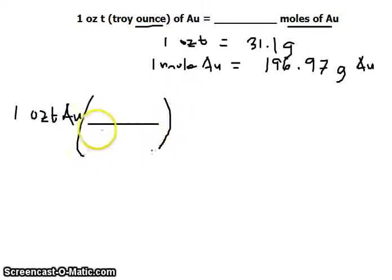1 troy ounce, we multiply that by the first conversion factor we have there, is equivalent to 31.1 grams. So we can now cancel this one.